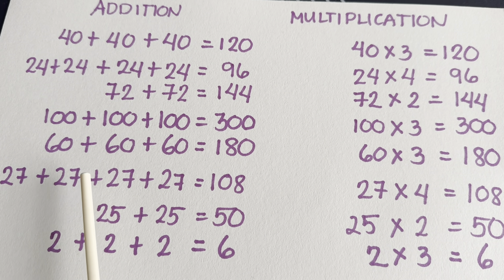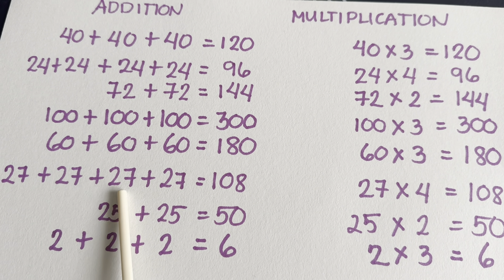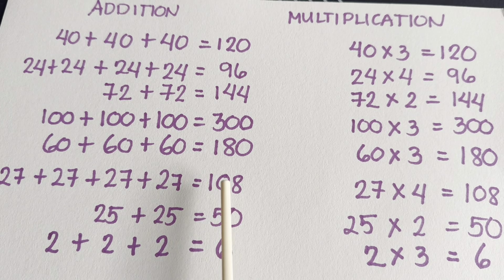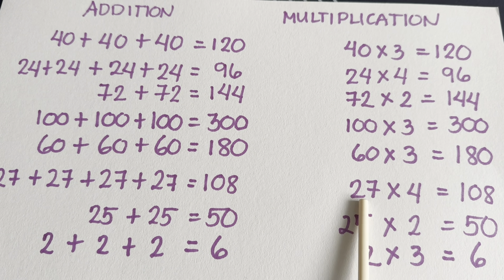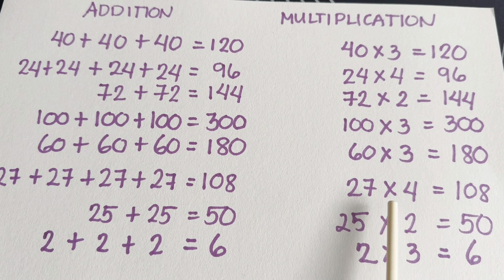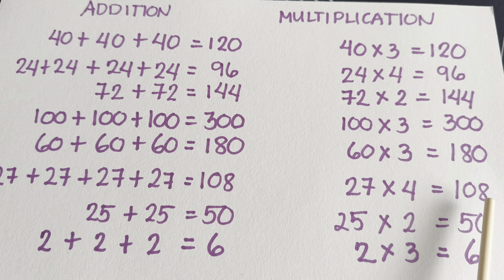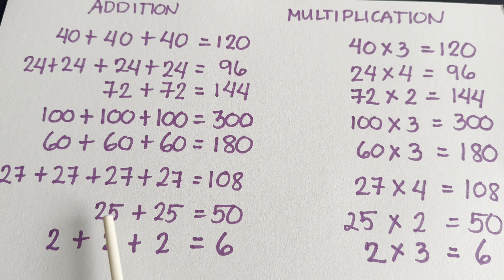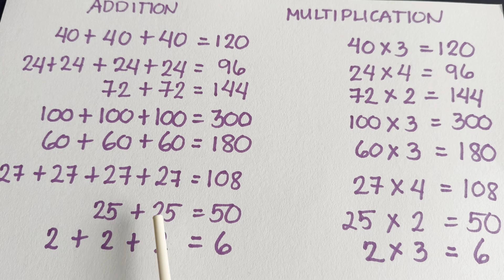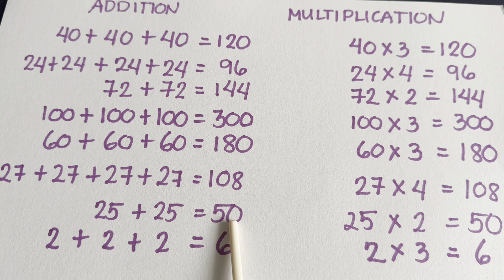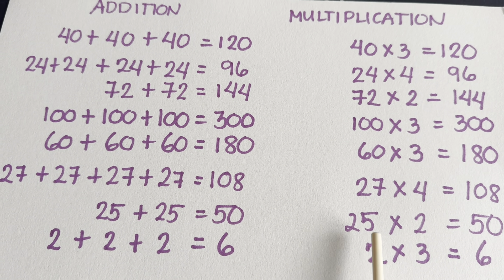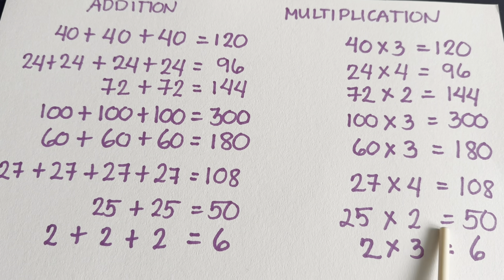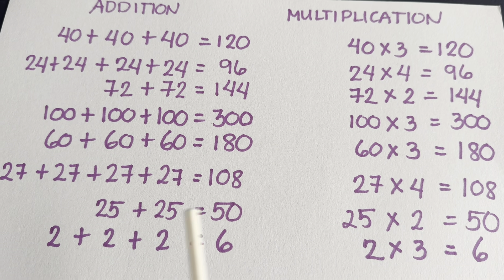27 plus 27 plus 27 plus 27 plus 27 is equals to 108. In Multiplication, 27 times 4 is equals to 108. 25 plus 25 is equals to 50. In Multiplication, 25 times 2 is equals to 50.